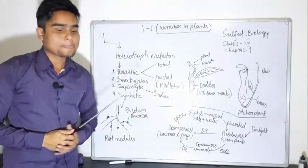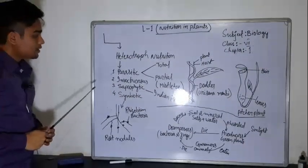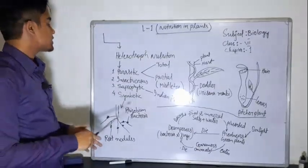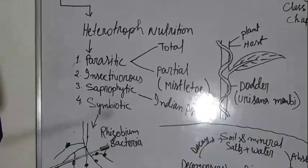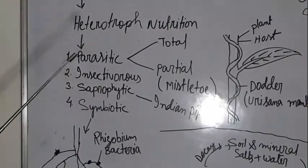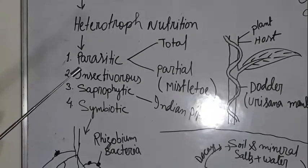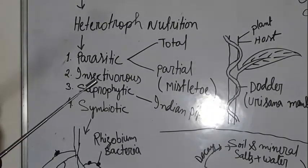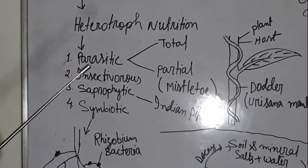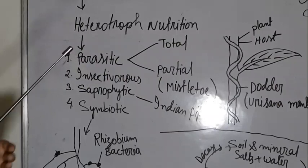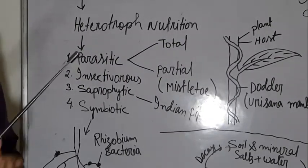This is number 3: saprophytic organisms. This is the saprophytic mode of nutrition. Saprophytic mode of nutrition is when an organism gets their nutrients from dead and decaying materials. This is called saprophytic mode of nutrition. Those organisms that have saprophytic nutrition are called saprophytes.